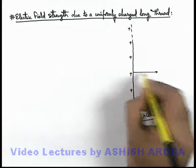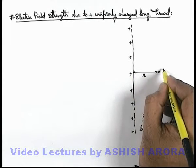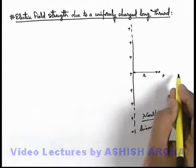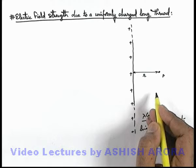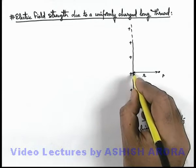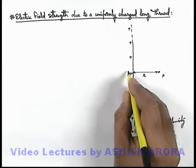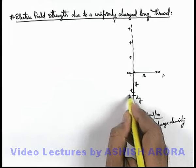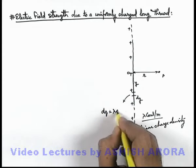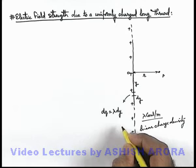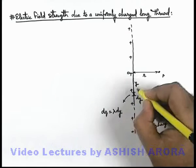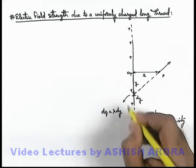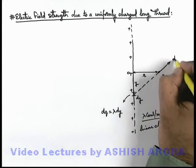At a distance r from the thread, there is a point P where we wish to find the electric field strength, which exists in the direction away from the thread. To calculate this, at a distance y from point O we consider a small element dy. On this element, the charge dq will be lambda dy, as lambda is the linear charge density. This small element can be taken as a point charge, and the electric field at point P will be in the direction away from this point charge, say this electric field is dE.